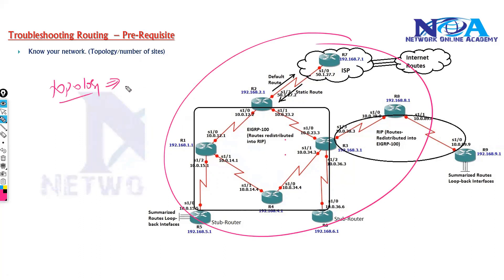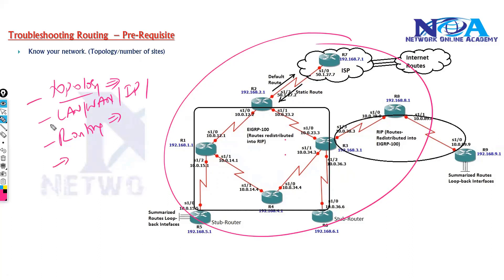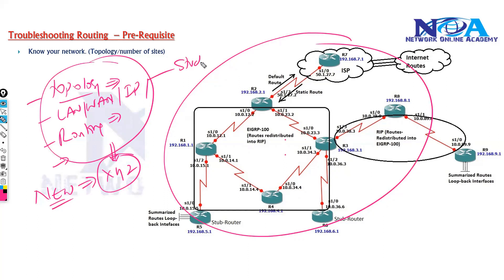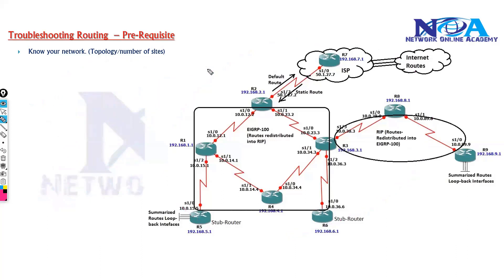Knowing your network means knowing your topology — how many sites you have, how they are connected, what interfaces go to LAN and WAN, interface IP addressing, what routing protocol is used for end-to-end connectivity, and how routing works. For example, if you're new to a company, you can't just jump into routers and start troubleshooting without studying the network, its topology, documentation, diagrams, and configurations.